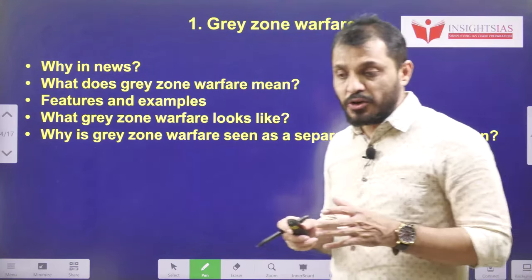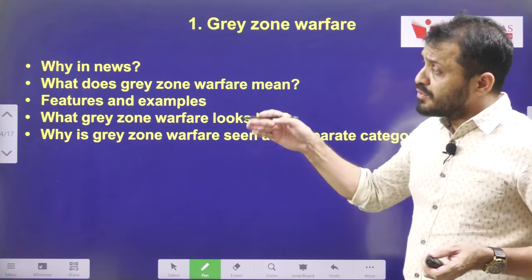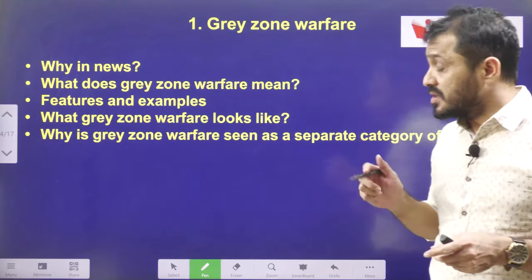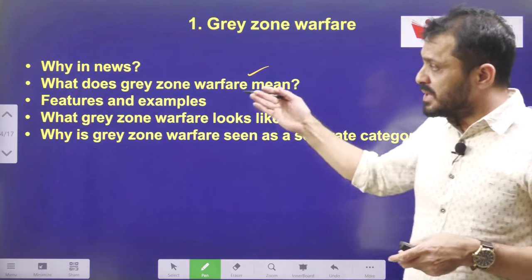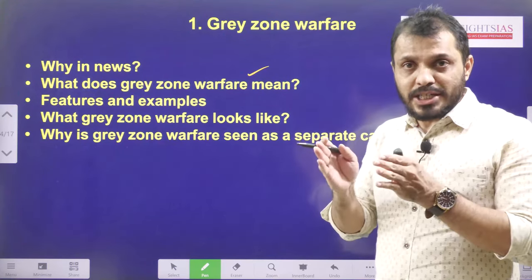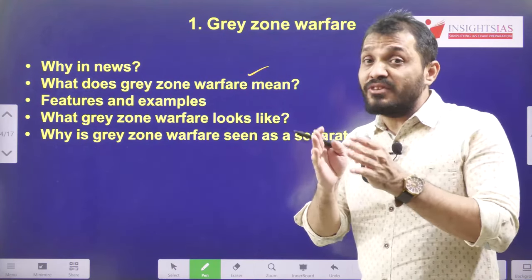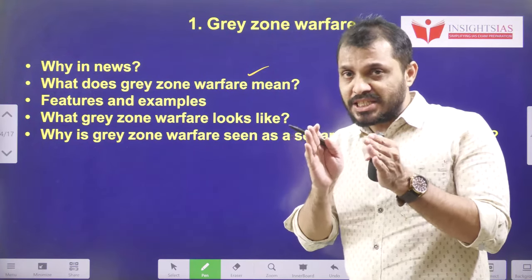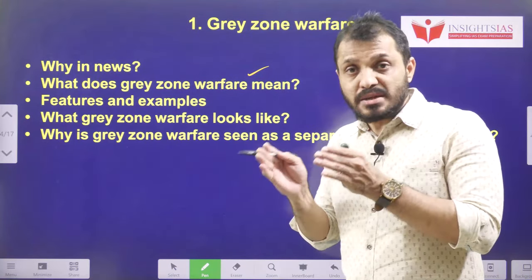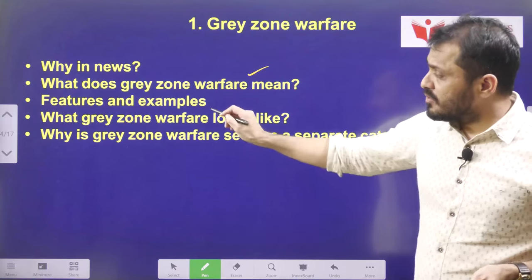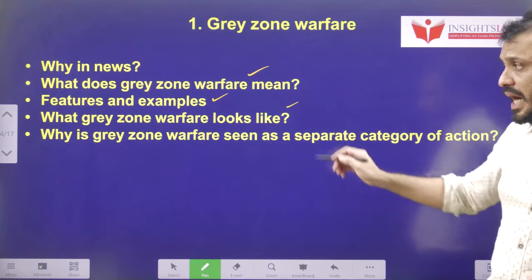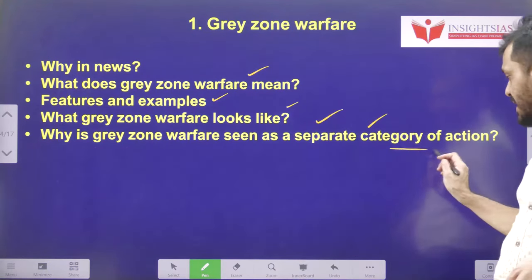Before we discuss further, let me introduce you to the video components. First, we will discuss about the context of this video — why we are discussing this particular topic. Then, what does gray zone warfare mean? According to our verbal understanding, there will be black and white, and between them there will be a gray area which covers both. In the same way, gray zone warfare covers both war as well as peace. Then we'll cover features, examples, and why gray zone warfare is seen as a separate category of action.